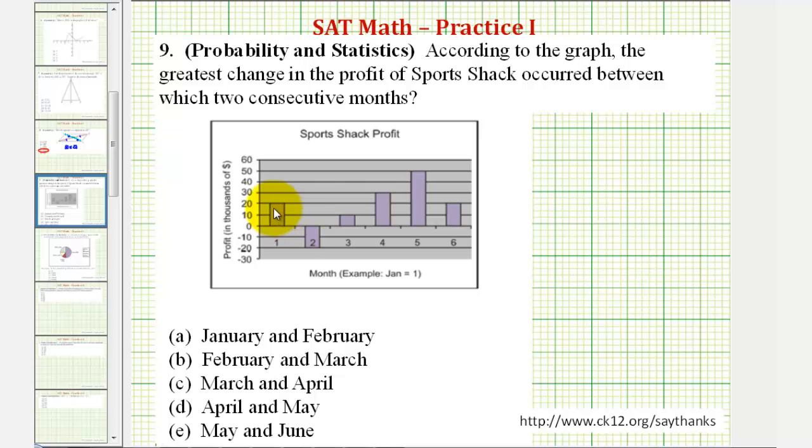From the first month to the second month, notice how profit went from twenty thousand to negative twenty thousand, which is a decrease of forty thousand.